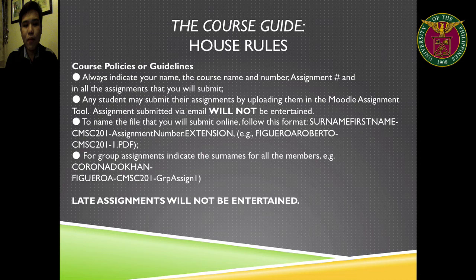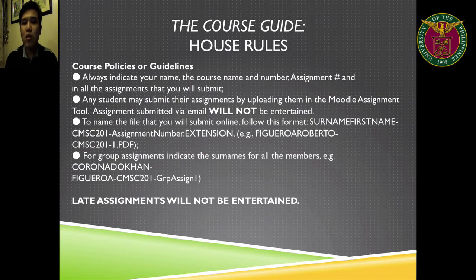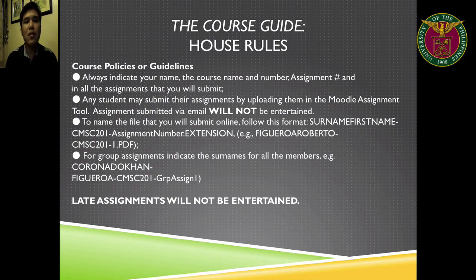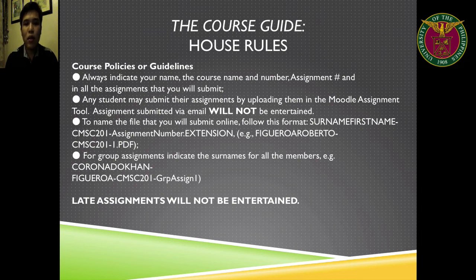Here are some house rules. I want to tell you that I am very strict on intellectual honesty. Our university motto is honor and excellence, but I want to rephrase it: it should be honor before excellence. So I want you to make sure that every assignment that you submit will be your own. If I catch you cheating, there will be dire consequences. For assignments, follow this naming convention: your surname, then your first name, dash, the subject which is Computer Science 201, dash, the assignment number, dot extension — it can be a doc, PDF, docx, or xls file.